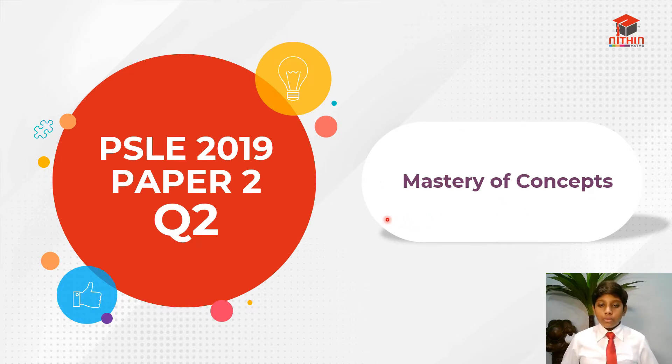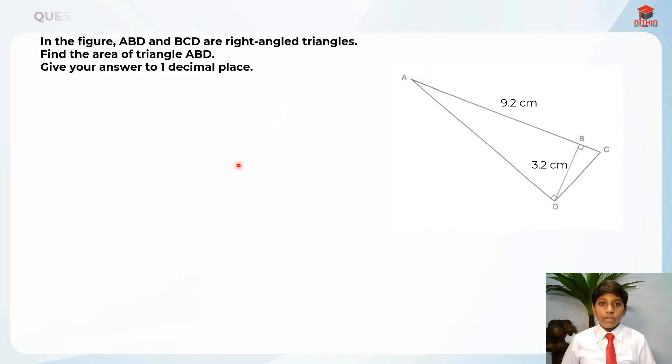So let's jump straight into Question 2. This question is testing us on area of triangle and rounding off. Let's read the question first. In the figure, ABD and BCD are right-angled triangles. Find the area of triangle ABD. Give your answer to one decimal place.